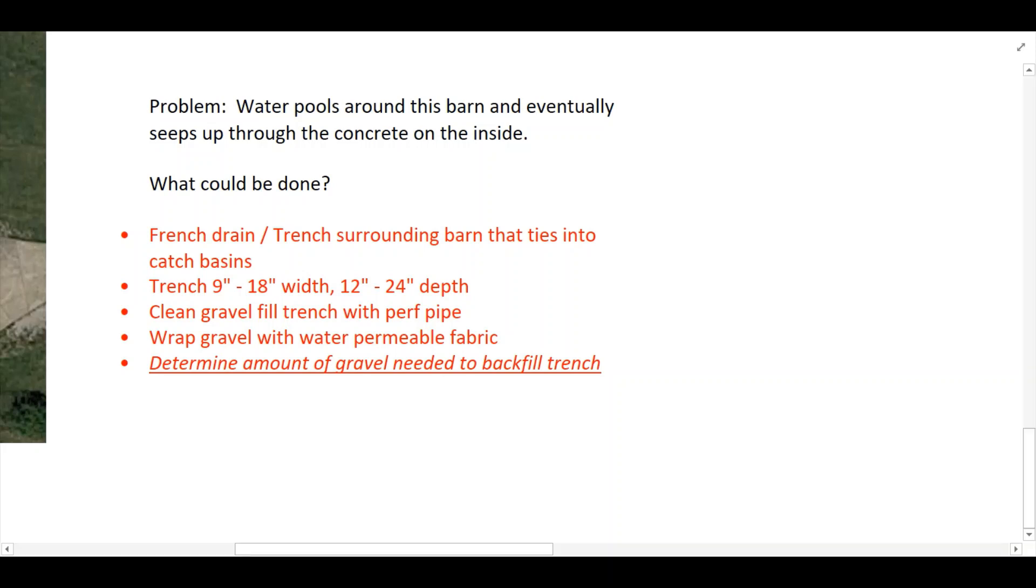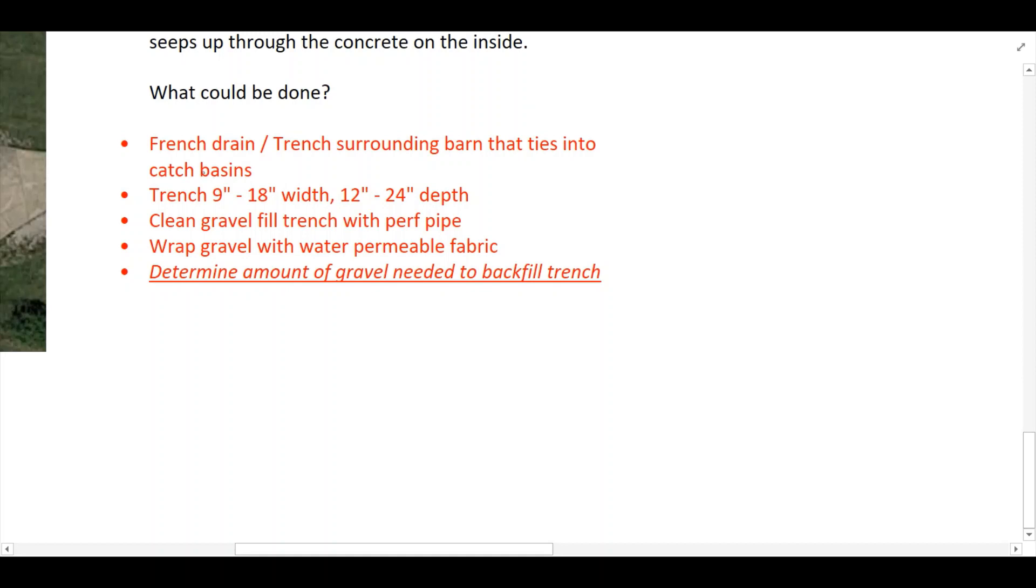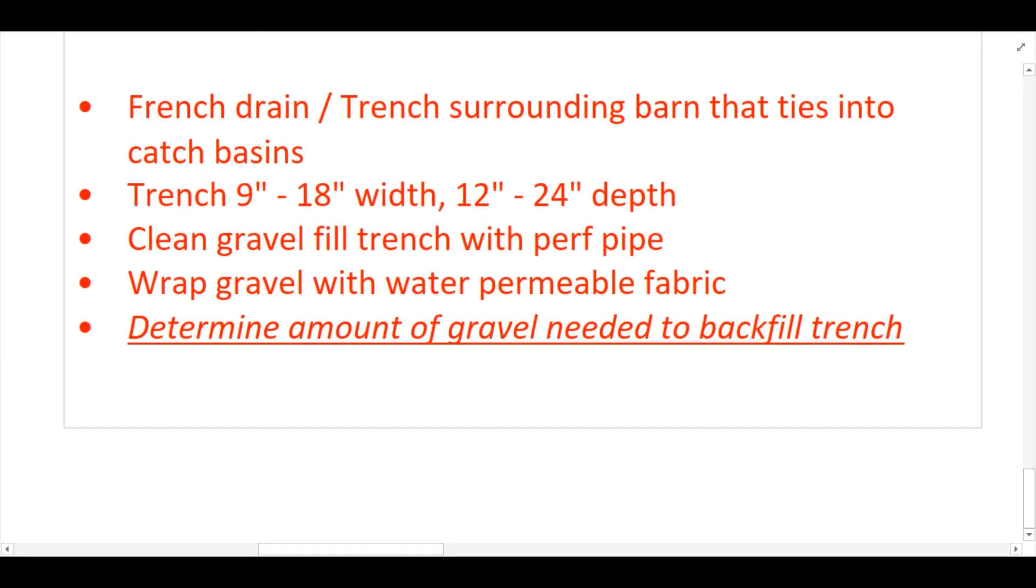This trench is also known as a French drain, a term you may have heard before. If you've got this drain tied into a catch basin or piping, then the water will effectively get off the surface, get away from the barn, and move away from the barn to keep it dry on the inside. Typically, trenches are between 9 and 18 inches wide. We're going with 12 inches in this problem. They're between 12 and 24 inches deep. We're going to go with a 24 inch depth here.